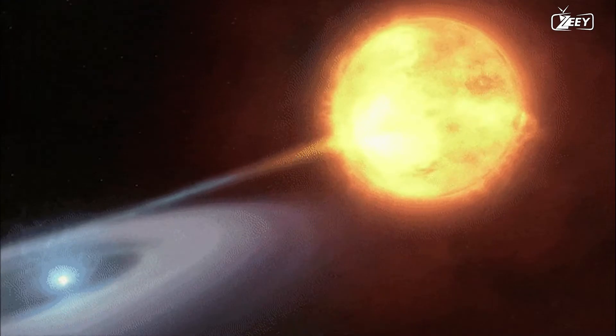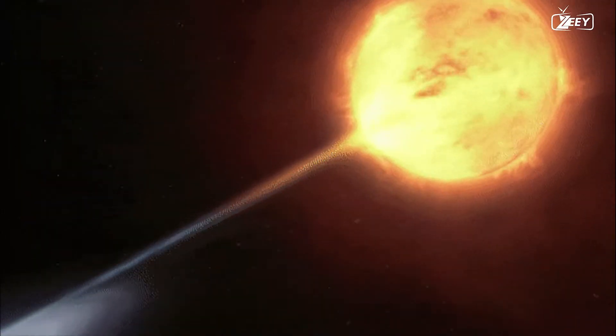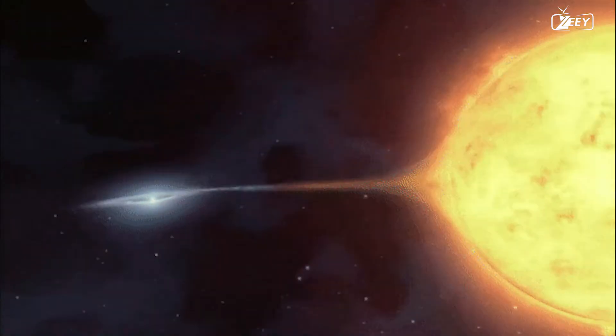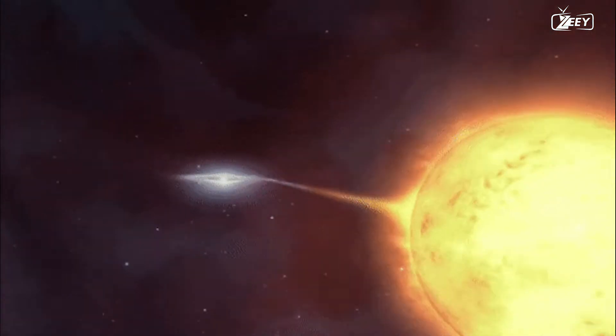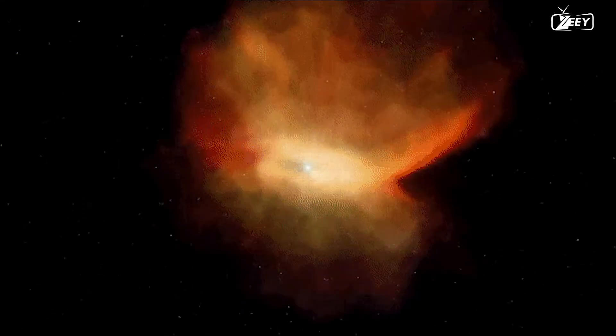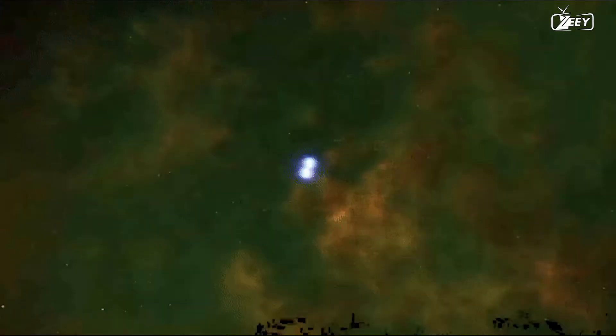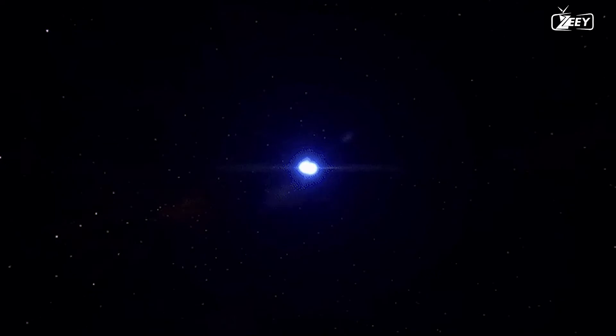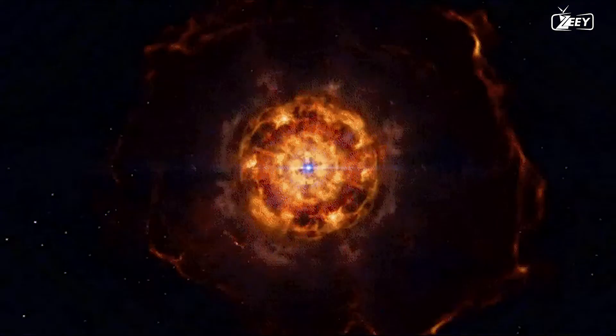As previously mentioned, the nova is brought on when a red giant imparts so much mass that it must explode. However, when it explodes, it doesn't self-detonate into oblivion. Instead, it's an explosion of mass, releasing all the internal built-up mass. Imagine it as a geyser. Old Faithful is on a cycle, and the same is true of this star.